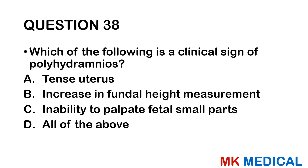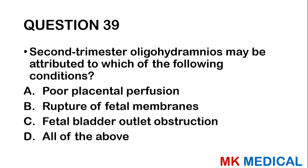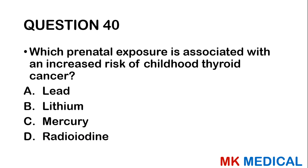Question thirty-nine: Second trimester oligohydramnios may be attributed to which of the following conditions? A, poor placental perfusion; B, rupture of fetal membranes; C, bladder outlet obstruction; D, all of the above. In oligohydramnios, either production of amniotic fluid is reduced or absorption is increased. All of the above causes can result in oligohydramnios in the second trimester.